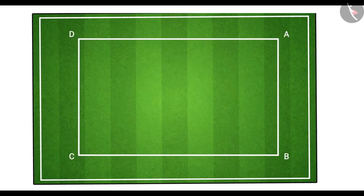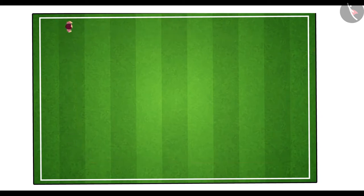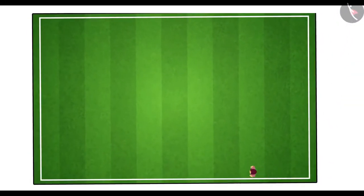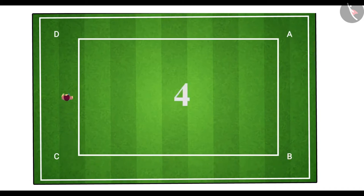Look at this diagram of a rectangular field A, B, C, D. The athlete runs around this rectangular track at uniform speed in the straight parts AB, BC, CD, and DA. The athlete changes her direction of motion at the corners of the field. She has to change her direction of motion four times to complete one round of a rectangular track.